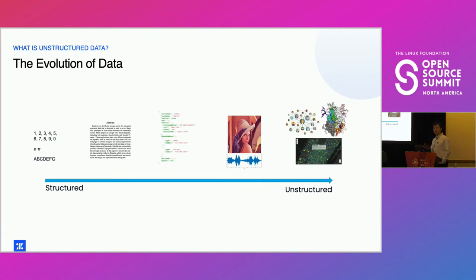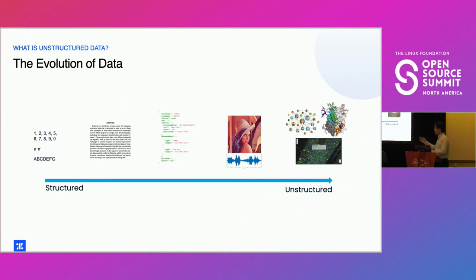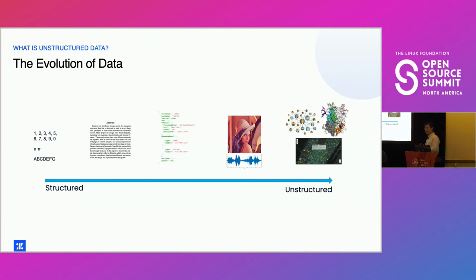I want to talk first about the evolution of data. In the 1960s, 70s, and 80s, when computers became ubiquitous, a major application was storage, indexing, and searching across massive quantities of data. Early on, a lot of that data was structured — tabular databases or semi-structured, like JSON. In the early 2010s, you had databases like MySQL, PostgreSQL, Cassandra, MongoDB, and so forth.